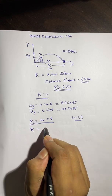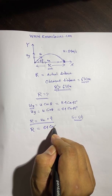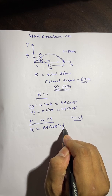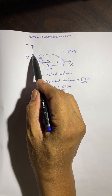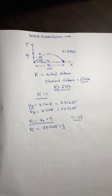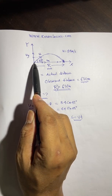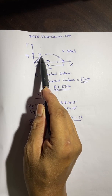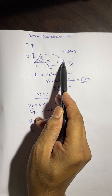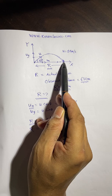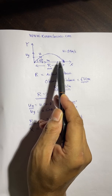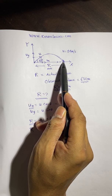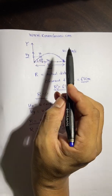Substituting ux, we get R = 84·cos45° × t. We do not know the value of t, so to get t we have to use the vertical motion of the particle. At time t, the particle covers horizontal distance R, and at the same time it goes up and comes back down to the ground.